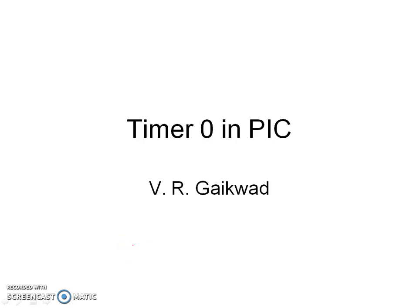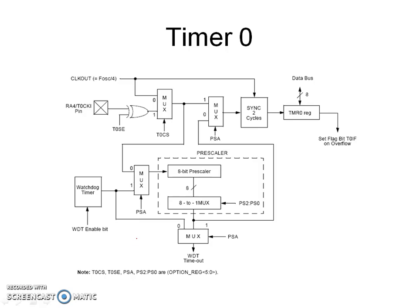In this video you will learn Timer 0, which is one of the three timers in PIC microcontroller. Consider the block diagram of Timer 0. It contains an 8-bit register TMR0 which holds the current 8-bit count, so Timer 0 is an 8-bit timer. There are four 2-to-1 multiplexers in Timer 0: M1, M2, M3, and M4.